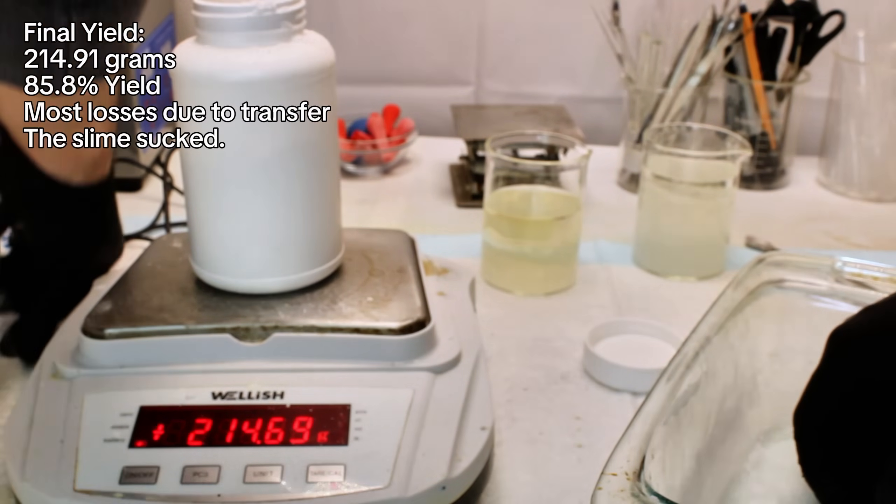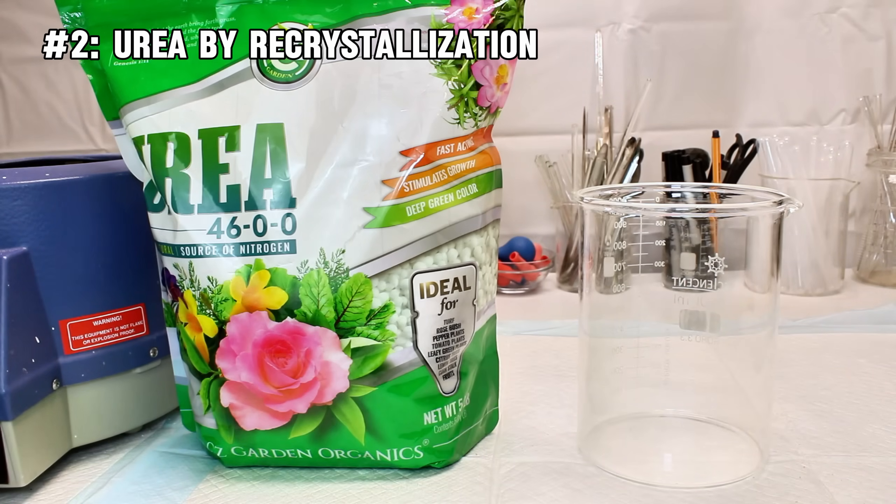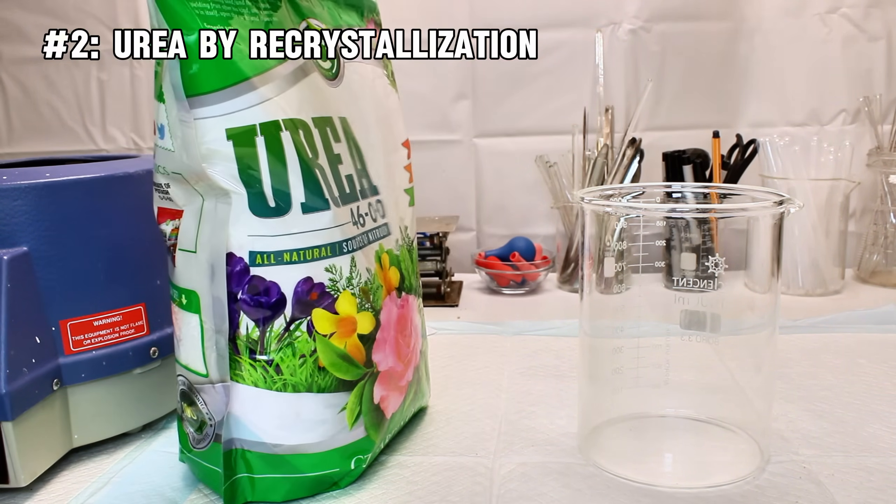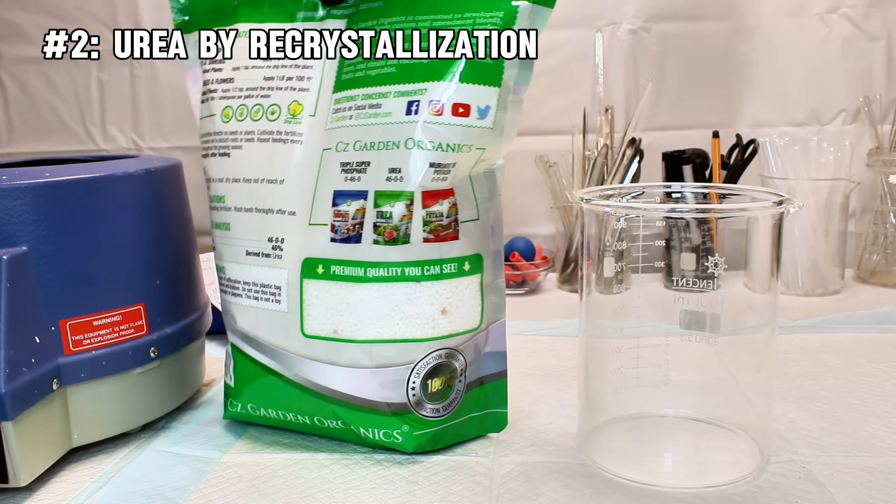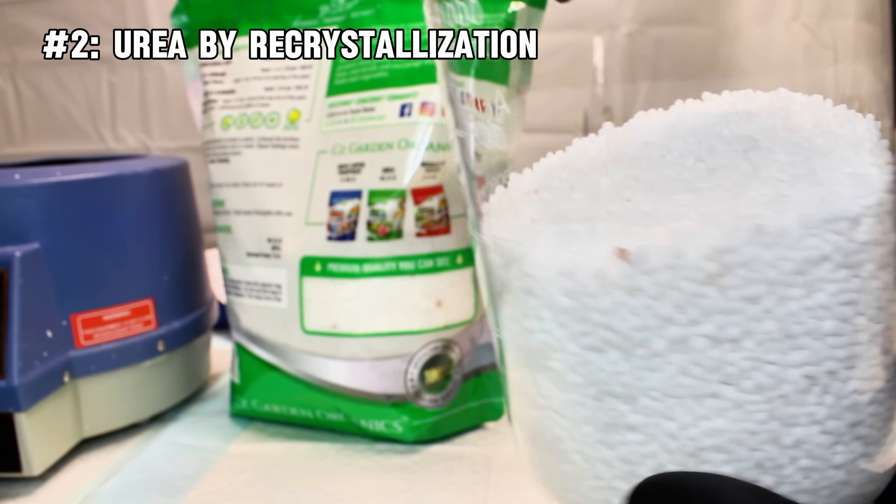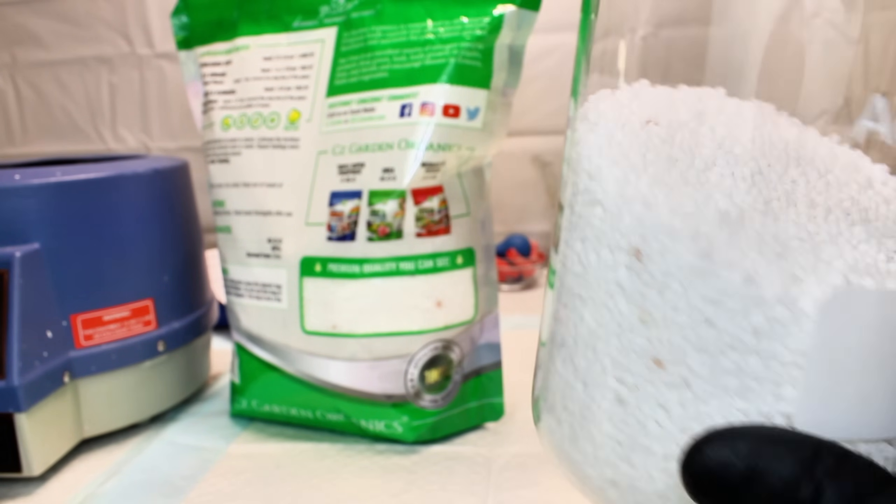For the next chemical I'll be purifying, I've got this big bag of fertilizer-grade urea. To purify this dirty urea into something resembling reagent grade, I'll be using simple recrystallization. This is the best method for urea given its very sharp solubility curve, making it very soluble in hot water and significantly less soluble in cold water.